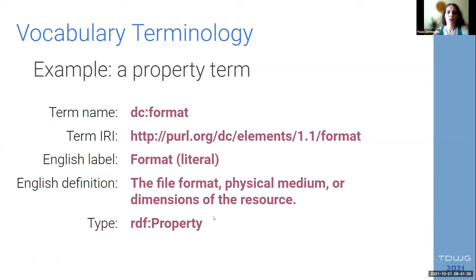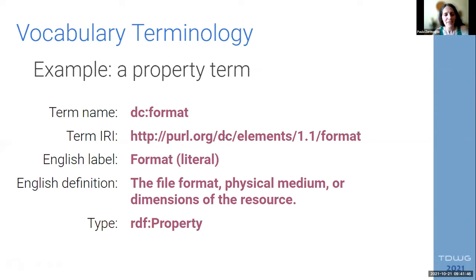An example of a property term could be 'format.' It will have a term name — the abbreviated IRI with a namespace — and then we have the IRI, a label, a definition, and the type stating it is a property.